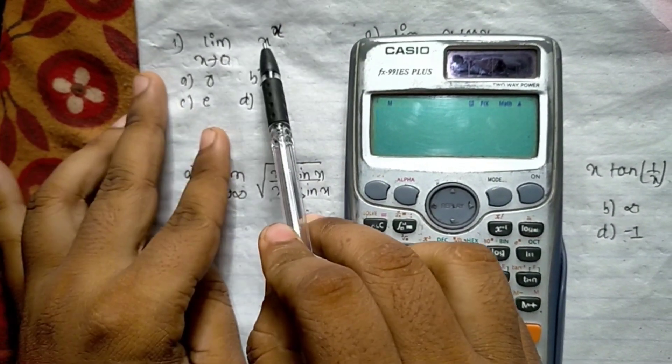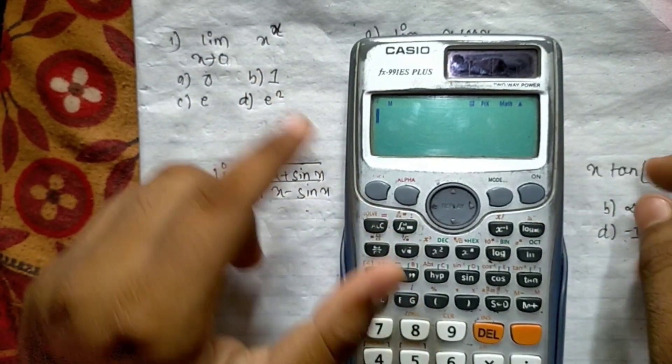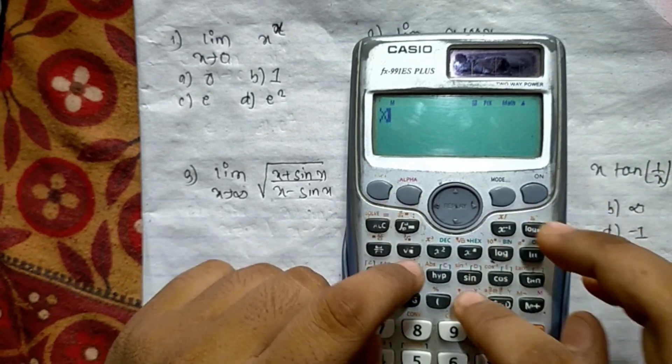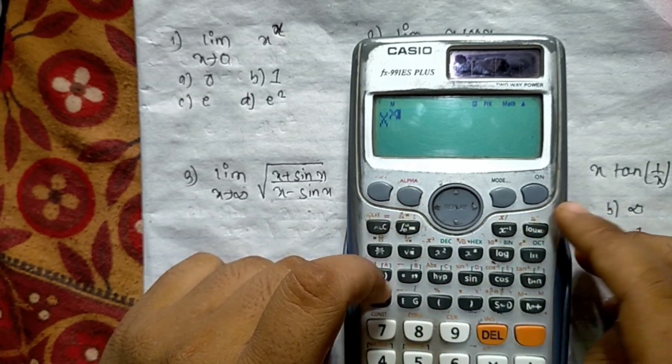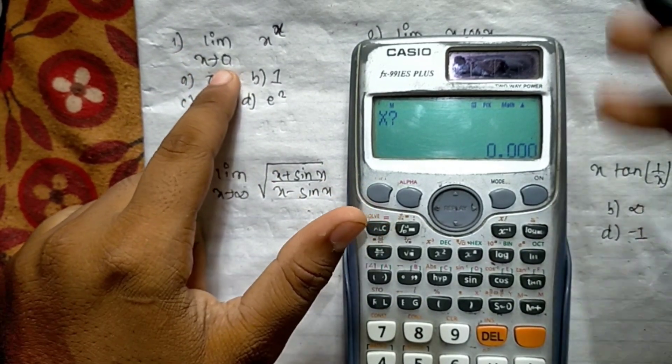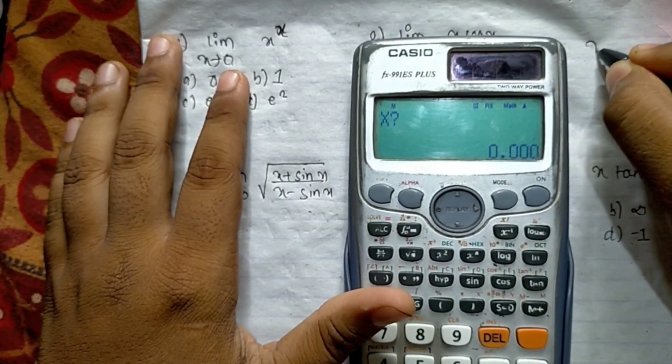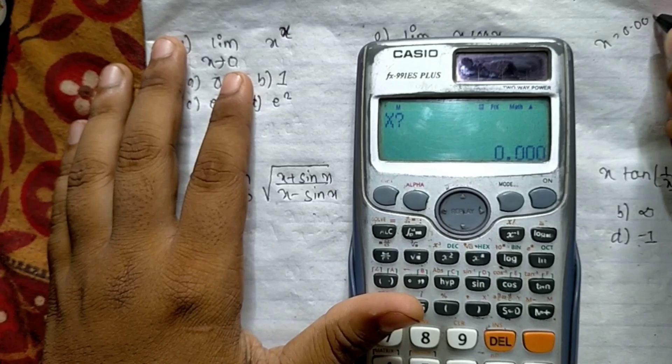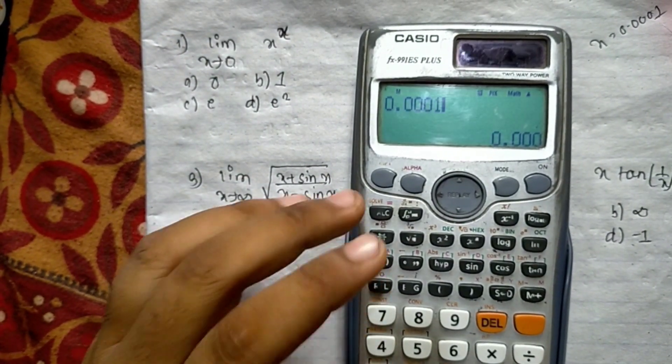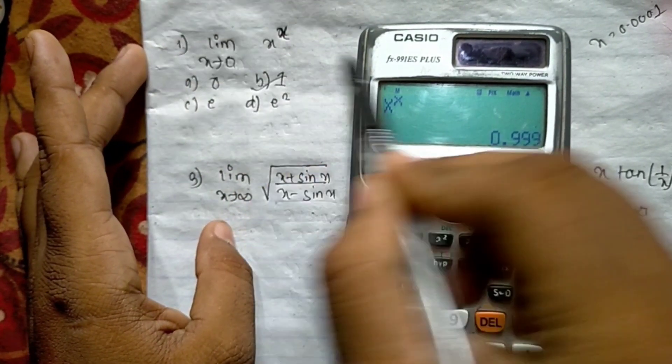Now the question: limit x tends to 0, x to the power x. We have this question in the calculator. X is the power x, x tends to 0. Put 0.0001, so 0.0001, answer 0.999. Round up, answer is 1.